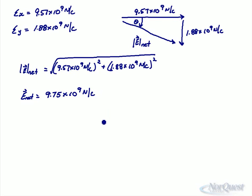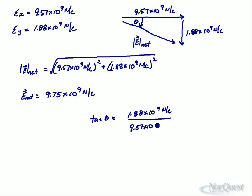Now we need the angle. Tan θ equals opposite over adjacent: 1.88×10⁹ N/C over 9.57×10⁹ N/C. Taking the inverse tangent of that ratio should give you 11.1 degrees. And if we're going to describe this direction, it would be 11.1 degrees south of east.